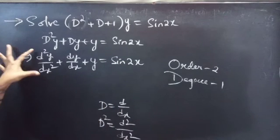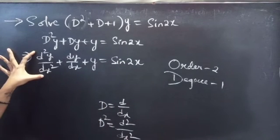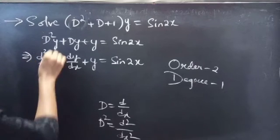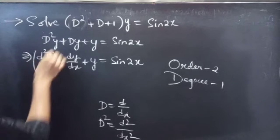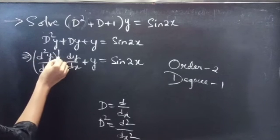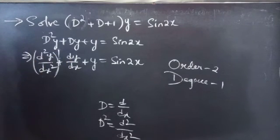Here, the highest derivative is d²y/dx². So our order will be 2, and the highest power of the highest derivative gives us the degree. The degree is 1.